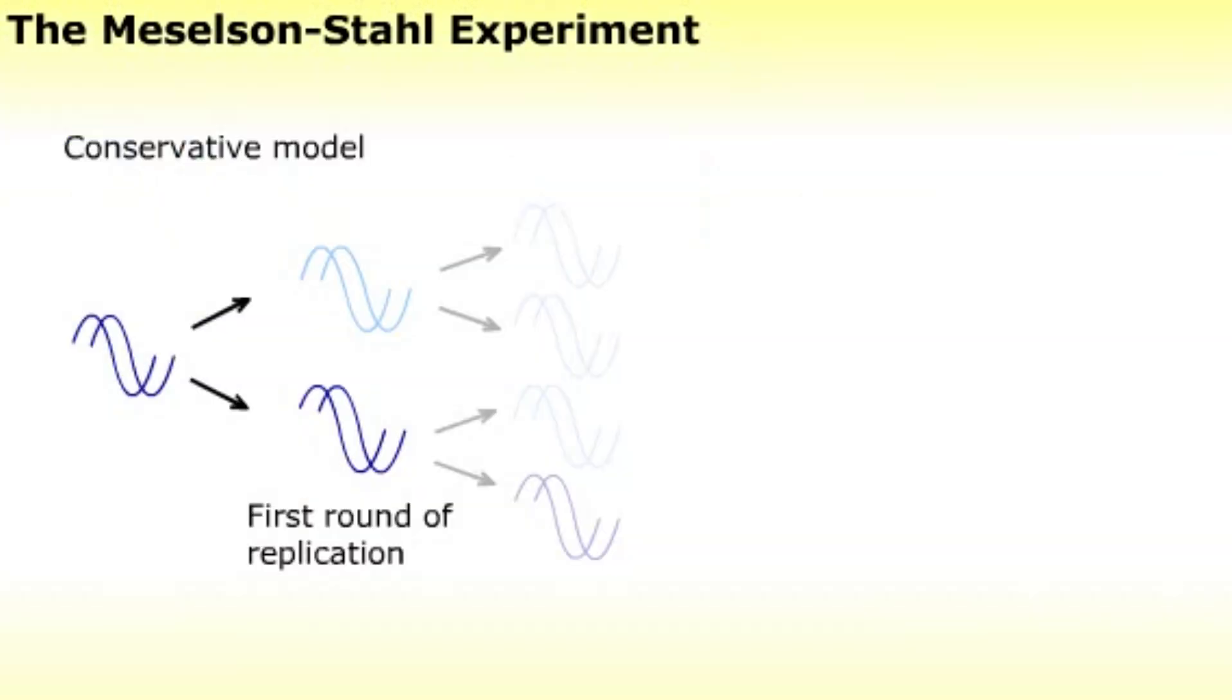The conservative model predicts that the first round of replication will yield the original DNA composed of only heavy nitrogen, and a new DNA molecule composed of only light nitrogen.